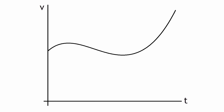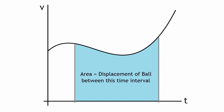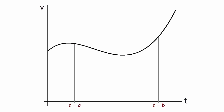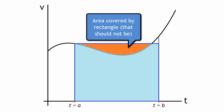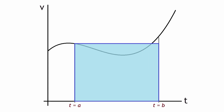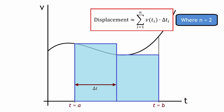Now we move over to integral calculus. Integral calculus mainly involves an infinite sum of infinitesimally small amounts. Let's say I have a graph of a ball's velocity with respect to time and I want to find the displacement. We know the displacement can be found from the area under the velocity-time graph. I could draw a rectangle on the graph with area equal to velocity times the change in t, but this isn't very accurate because the rectangle doesn't perfectly cover the area under the curve.